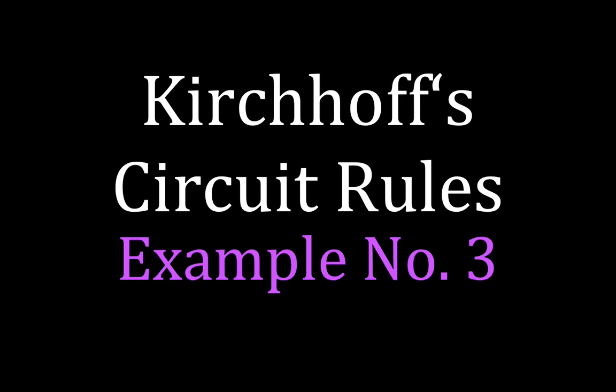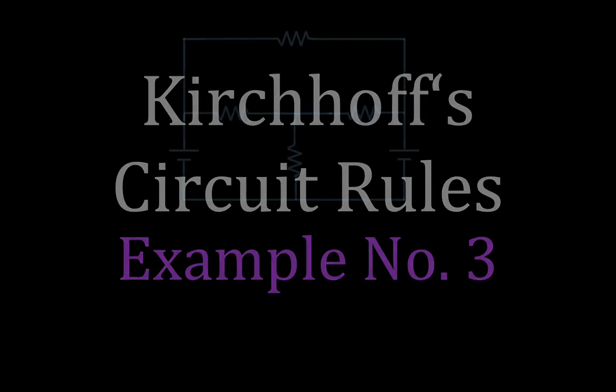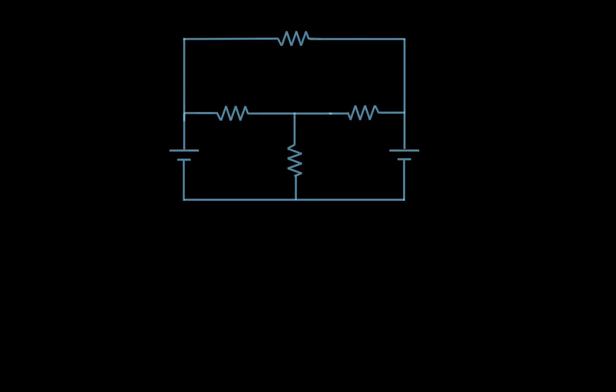In today's video we're going to go over another example of using Kirchhoff circuit laws to determine, in this case, a voltage and then the direction and magnitude of the currents in the rest of the branches of the circuit. In a previous video I made an introduction and explanation of what Kirchhoff's rules are and how we apply them, and also made some additional example videos which you can link to in the description.